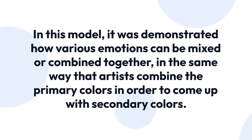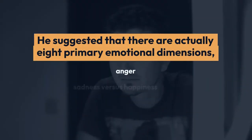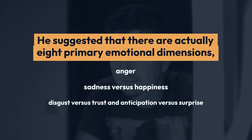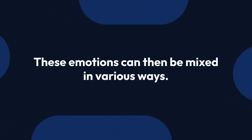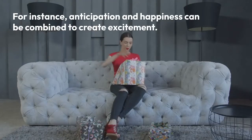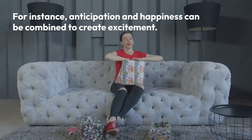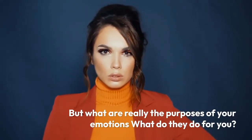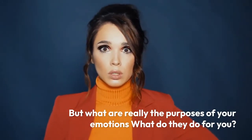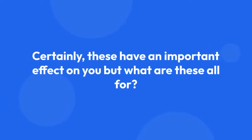In this model, it was demonstrated how various emotions can be mixed or combined together, in the same way that artists combine primary colors to come up with secondary colors. He suggested that there are actually eight primary emotional dimensions, including fear vs. anger, sadness vs. happiness, disgust vs. trust, and anticipation vs. surprise. These emotions can then be mixed in various ways — for instance, anticipation and happiness can be combined to create excitement.